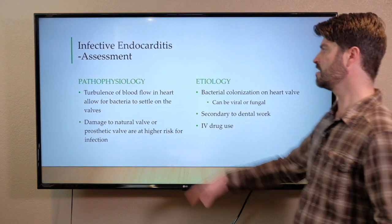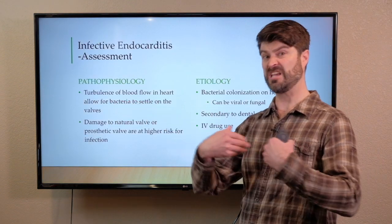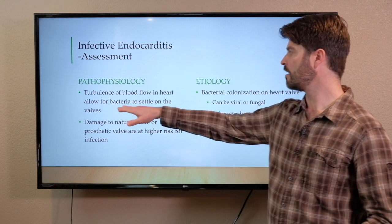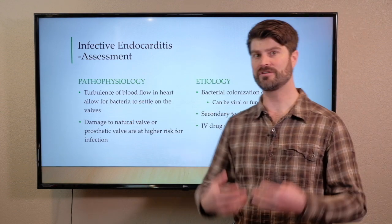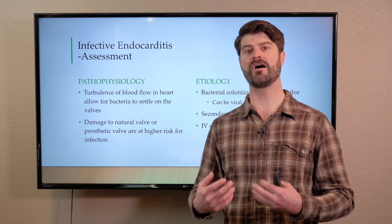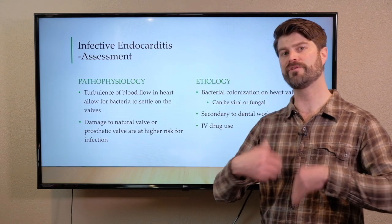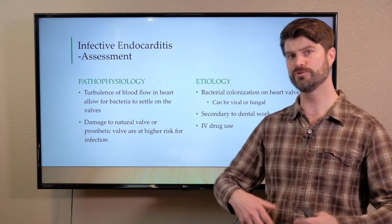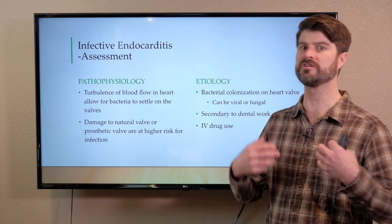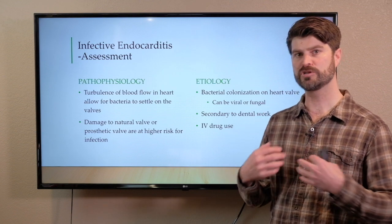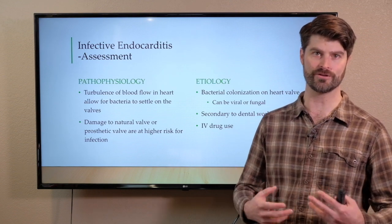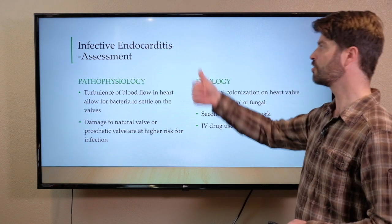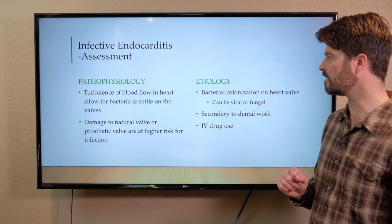What it is: turbulent blood flow through the heart and incomplete closure of the heart valve allows bacteria to settle on the valve. When we have directional flow through the heart, it can flush things through more effectively. If we have turbulence, it's much more likely that bacteria can settle onto some of those valves in the heart, creating this infective endocarditis.